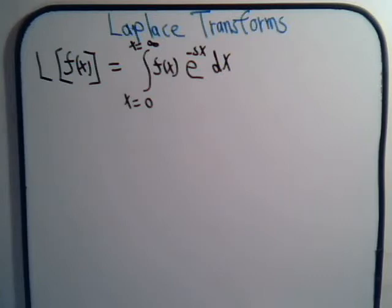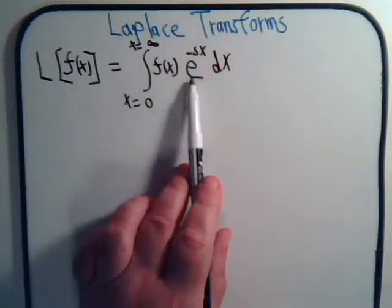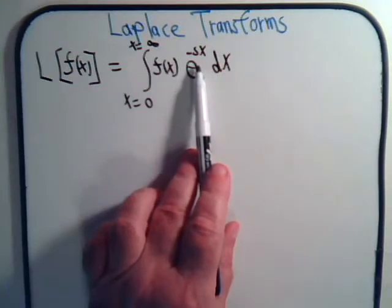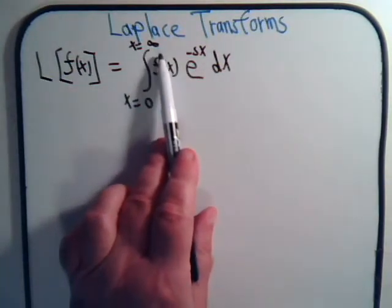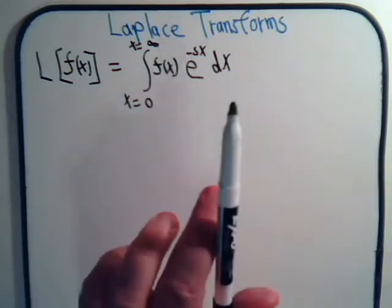The first thing we have to be aware of is that if we're going to get an expression that has e to some power, we have to be careful because one of the limits is actually at infinity. Let's see how we can handle that.